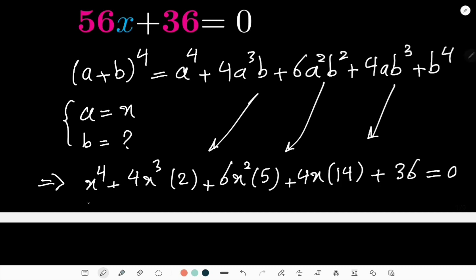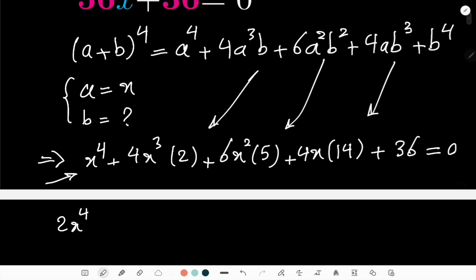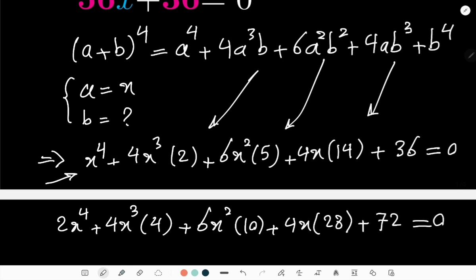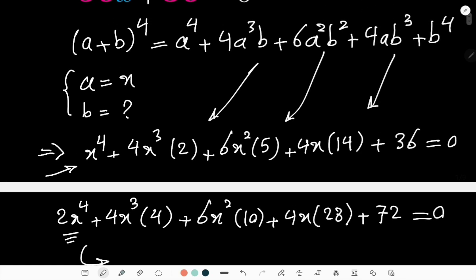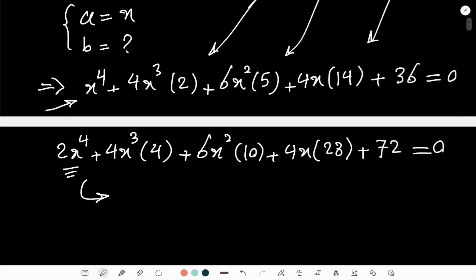Let's multiply this equation here by 2. Then I get 2x^4 + 4x^3 (I multiply it with the number inside parentheses) and then I get here 4 + 6x^2 (10) + 4x times 28 + 72, this is equal to zero. And well, I have 2x^4—it kind of suggests that maybe actually instead of putting it equal to something like (x+b)^4, maybe I should put it equal to (x+b₁)^4 + (x+b₂)^4.